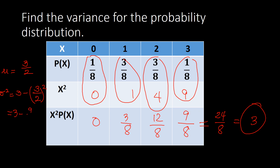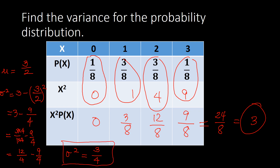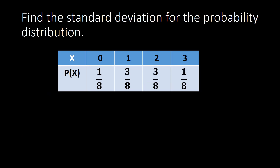So σ² = 3 minus (3/2)². Squaring 3/2 means distributing the exponent to both numerator and denominator: 3² is 9 and 2² is 4, giving 9/4. To subtract, we express 3 as 3/1, then multiply by 4/4 to get 12/4. So σ² = 12/4 minus 9/4, which equals 3/4. That is our variance.